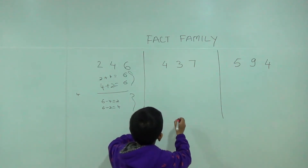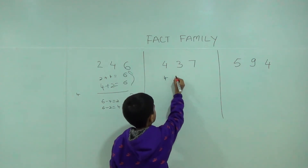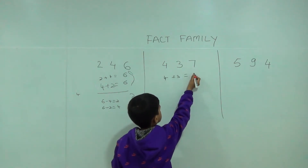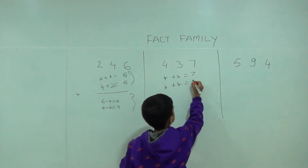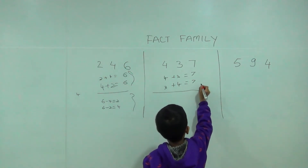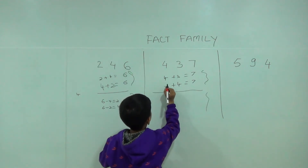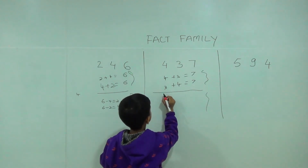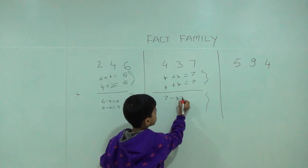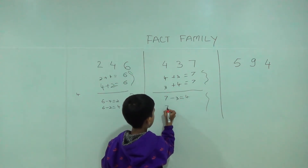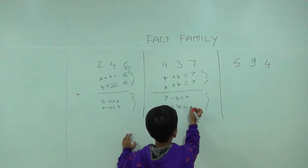4 plus 3 is equal 7, and 3 plus 4 is equal 7. Now we will do subtraction: 7 minus 3 is equal 4, and 7 minus 4 is equal 3.